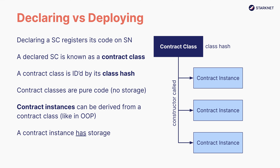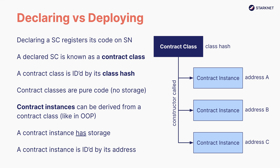A contract instance has storage, in contrast to a contract class which is pure code and has no internal state. While a contract class is identified by its class hash, a contract instance is identified by its unique address on the network. In short, declaring and deploying are two steps to make your smart contract available on StarkNet: declaring is about registering a new codebase and has to be done only once globally, while deploying is mandatory and you need to define which contract class to use as the blueprint.